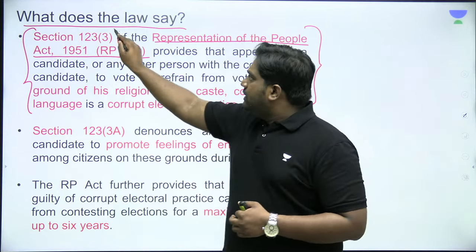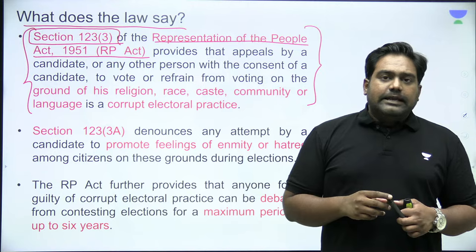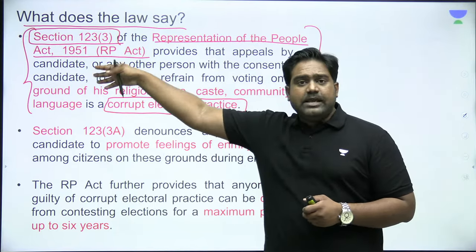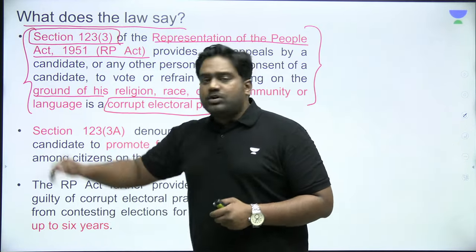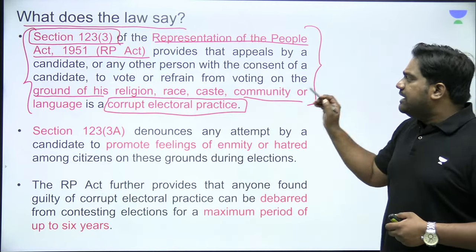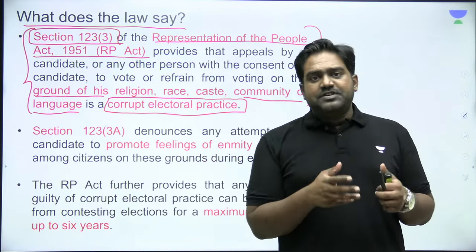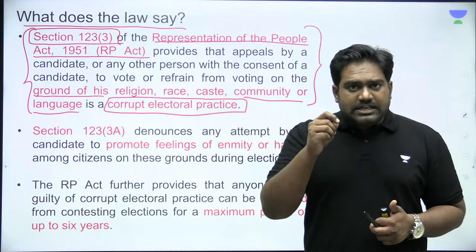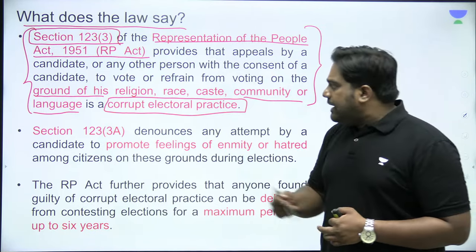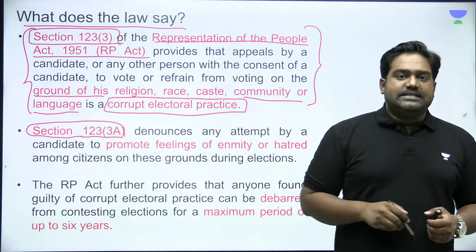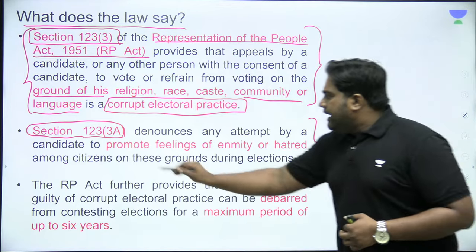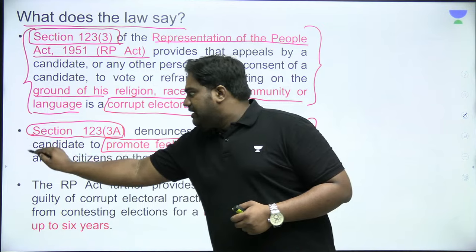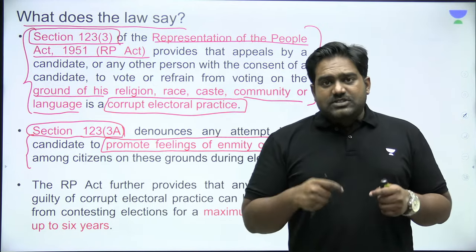Under the law, Section 123 of the Representation of the People Act (RPA) deals with corrupt electoral practices. Clause 3 of Section 123 clearly prohibits seeking votes on the grounds of religion, caste, community, race, or language. Exploiting social divisions to seek votes and win elections is prohibited under this provision. It denounces any practice where parties or candidates promote enmity and hatred in society to seek votes.